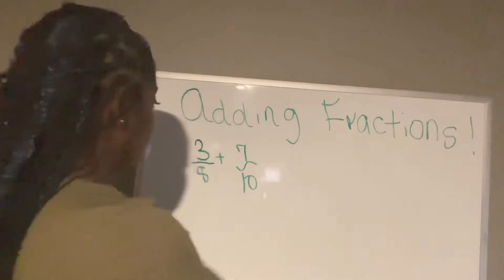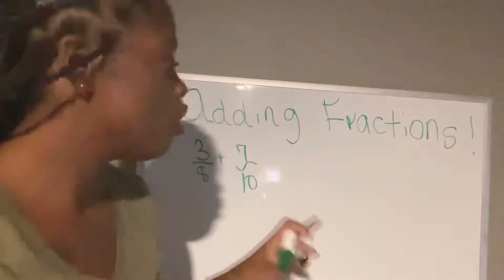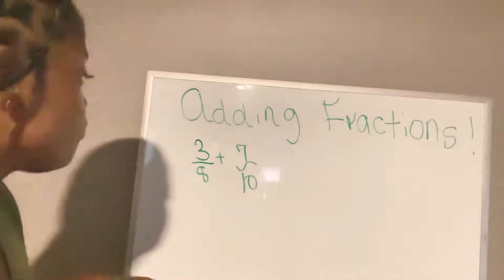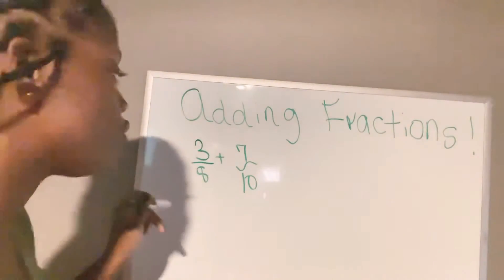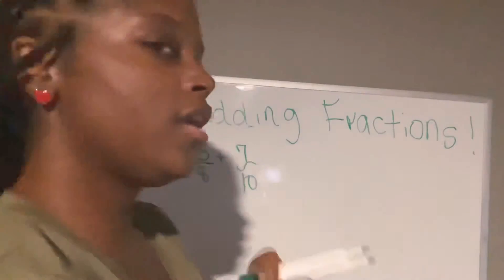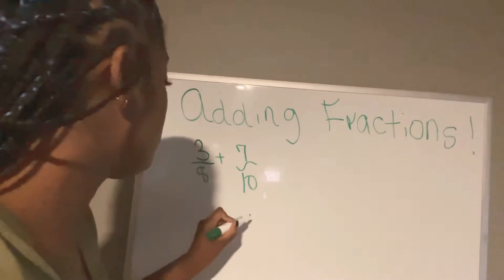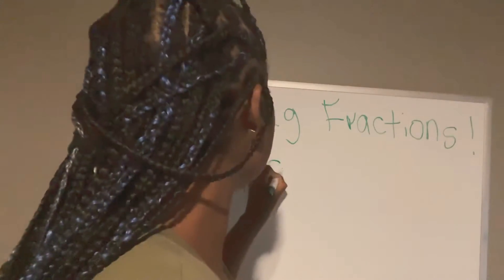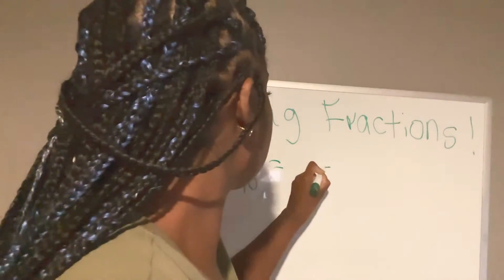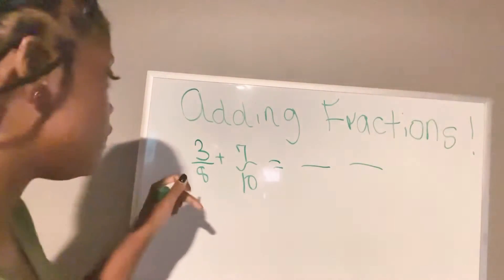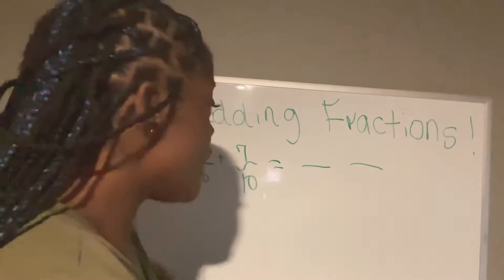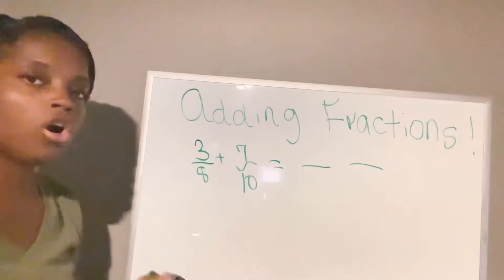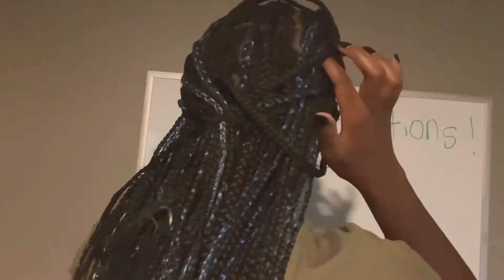So let's get into adding fractions with different denominators — three over eight plus seven over ten. We will never add straight across because the denominators aren't the same. Everything is based off the denominators. We have to find a common number. Ten, twenty, thirty, forty — now some people multiply the two bottom numbers together, which you could, but it costs a lot of extra work. So I'm going to try finding 80, because 80 is a number that eight and ten have in common.